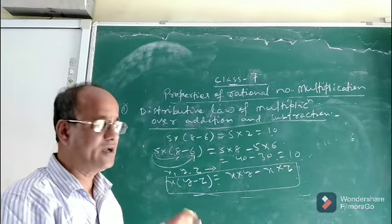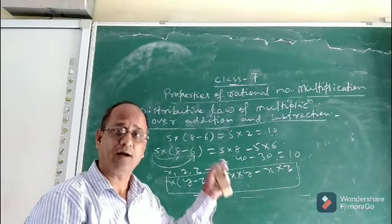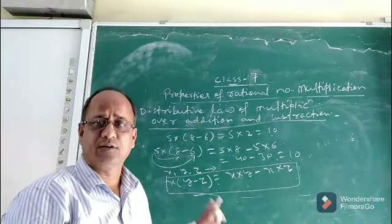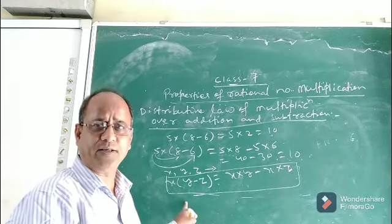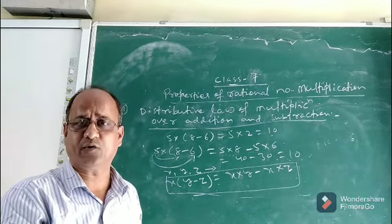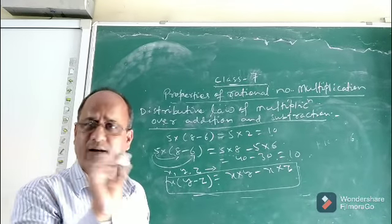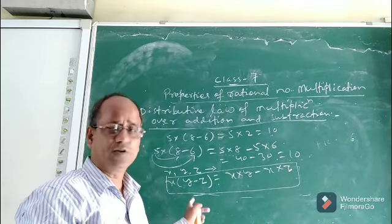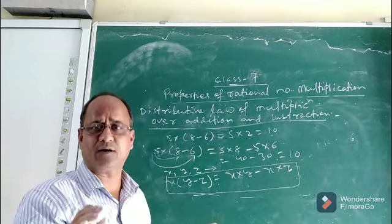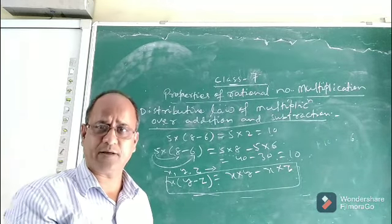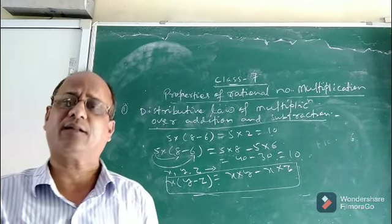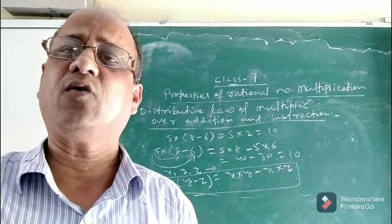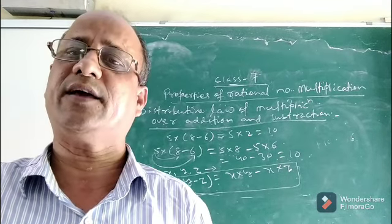The previous one I discussed is the distributive property of multiplication over addition. I hope you understood all the properties of multiplication. With this we have completed all the properties of rational number multiplication — how rational numbers are multiplied, and all the properties. If you have understood, you can easily solve the problems by applying those properties. We will discuss the problems later. Then we will again meet with division — how rational numbers are divided — in the next class. Thank you.